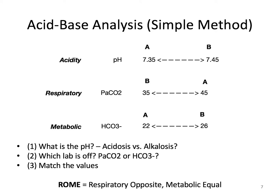Keep in mind the mnemonic ROME — Respiratory Opposite, Metabolic Equal — meaning that in respiratory problems, the values are in opposition. For instance, a low pH and a high PaCO2 indicate respiratory acidosis. In metabolic problems, the values are moving in the same direction — for instance, a high pH and a high bicarb indicate metabolic alkalosis.